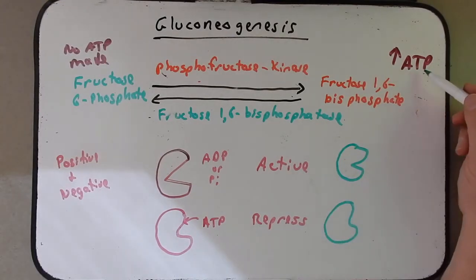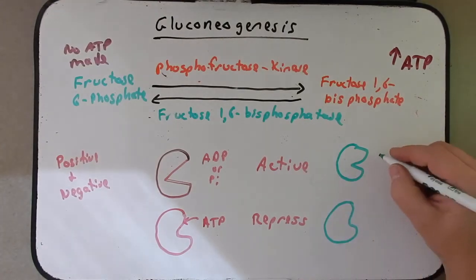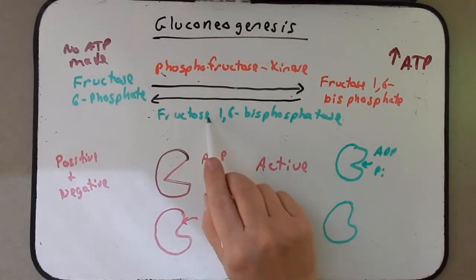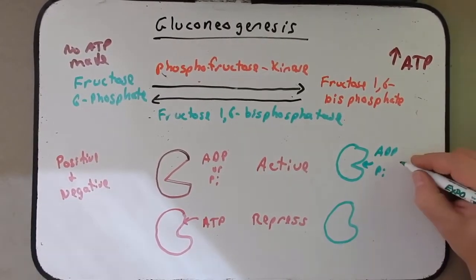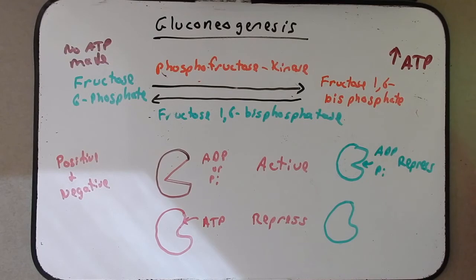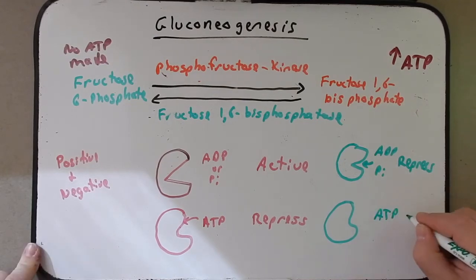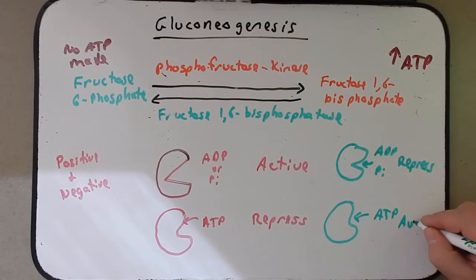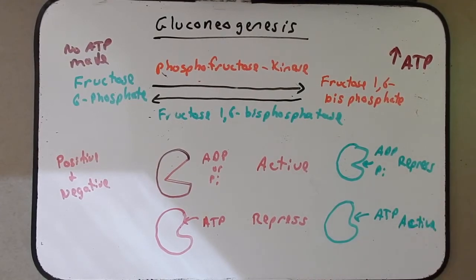When ATP is being used and it's generating ADP and PI, those components, ADP and PI, will bind to fructose 1,6-bisphosphatase and repress it. On the other hand, if there are large stores of ATP and there's no need to make more ATP, ATP will bind to fructose 1,6-bisphosphatase and make it active.